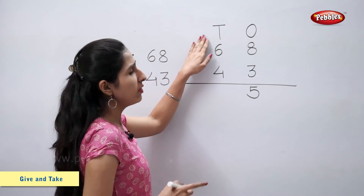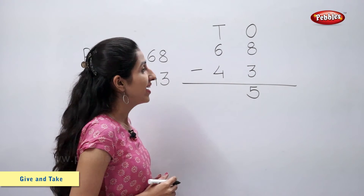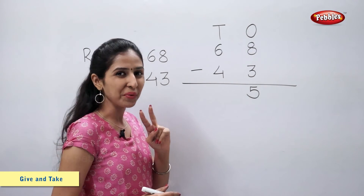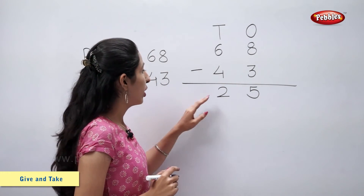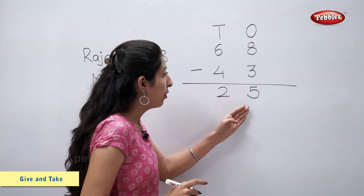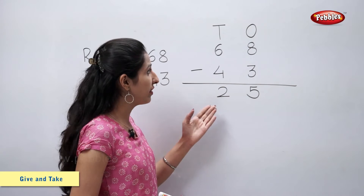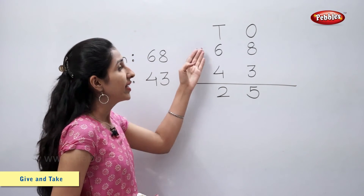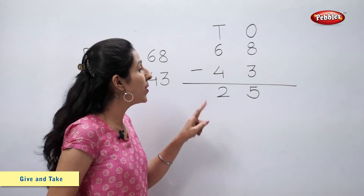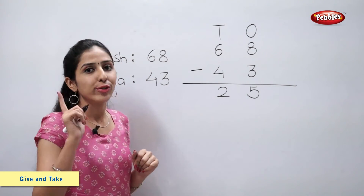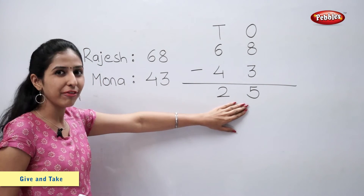Now tens: 6 minus 4 is equal to 2. Now we have 2 tens and 5 ones, so the number is 25. So 68 minus 43 is equal to 25. We can say that now Rajesh is left with 25 pearls.